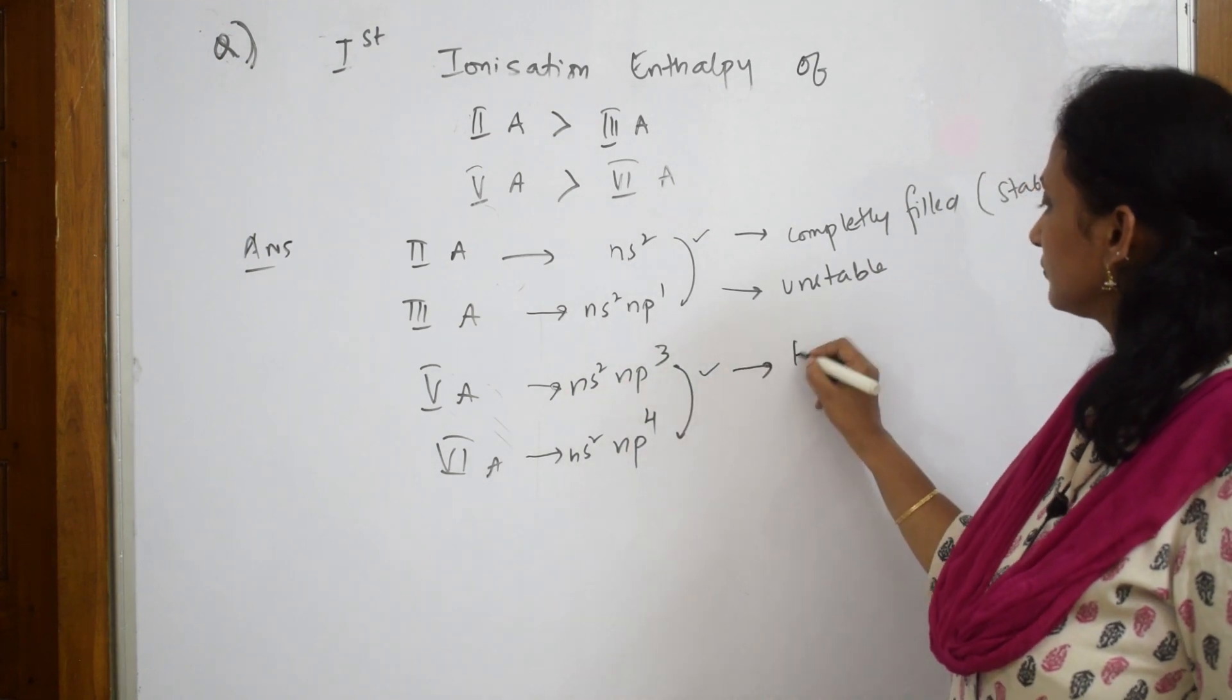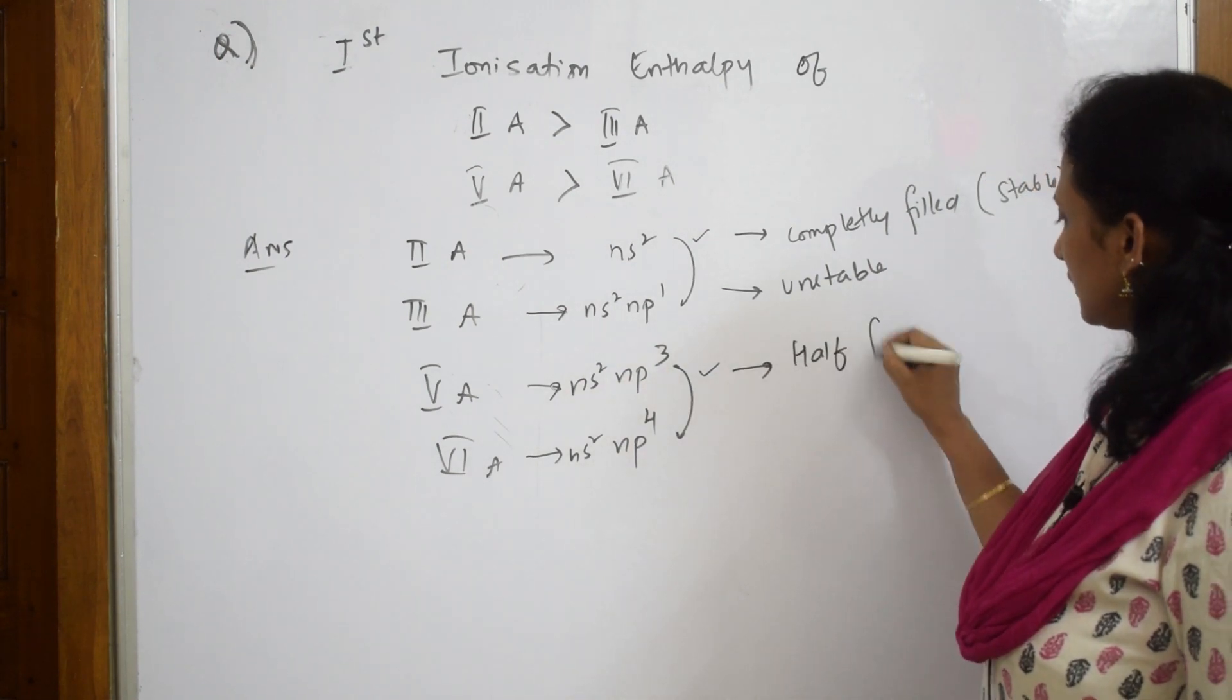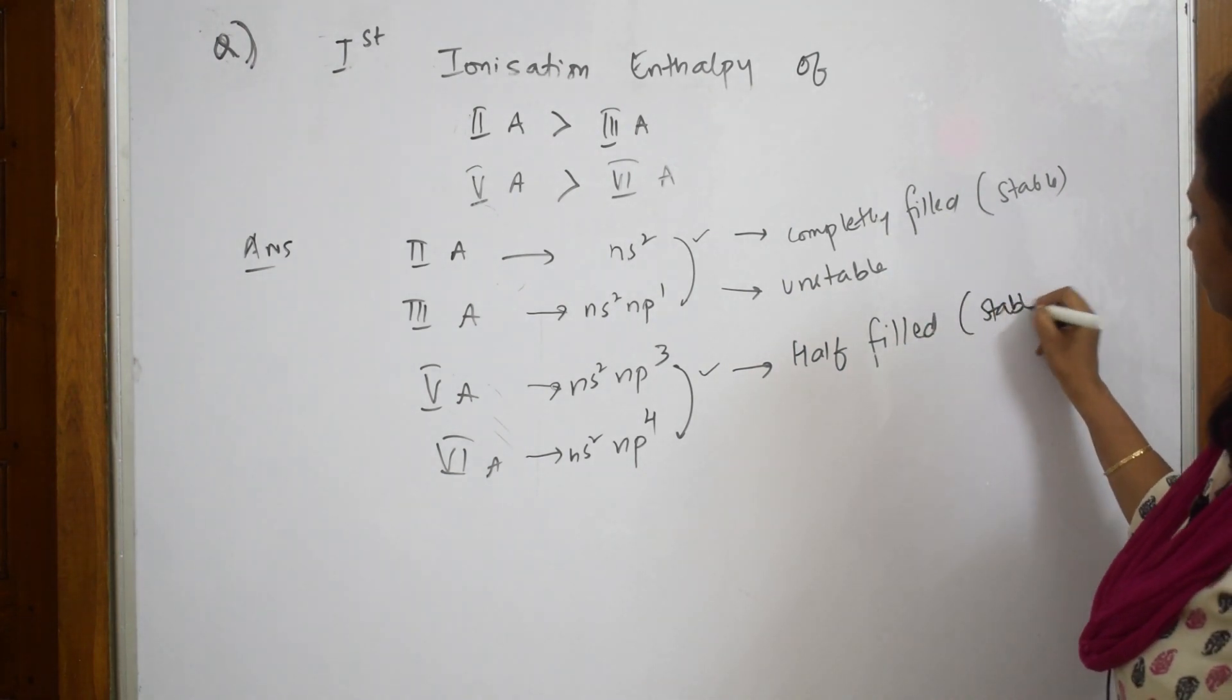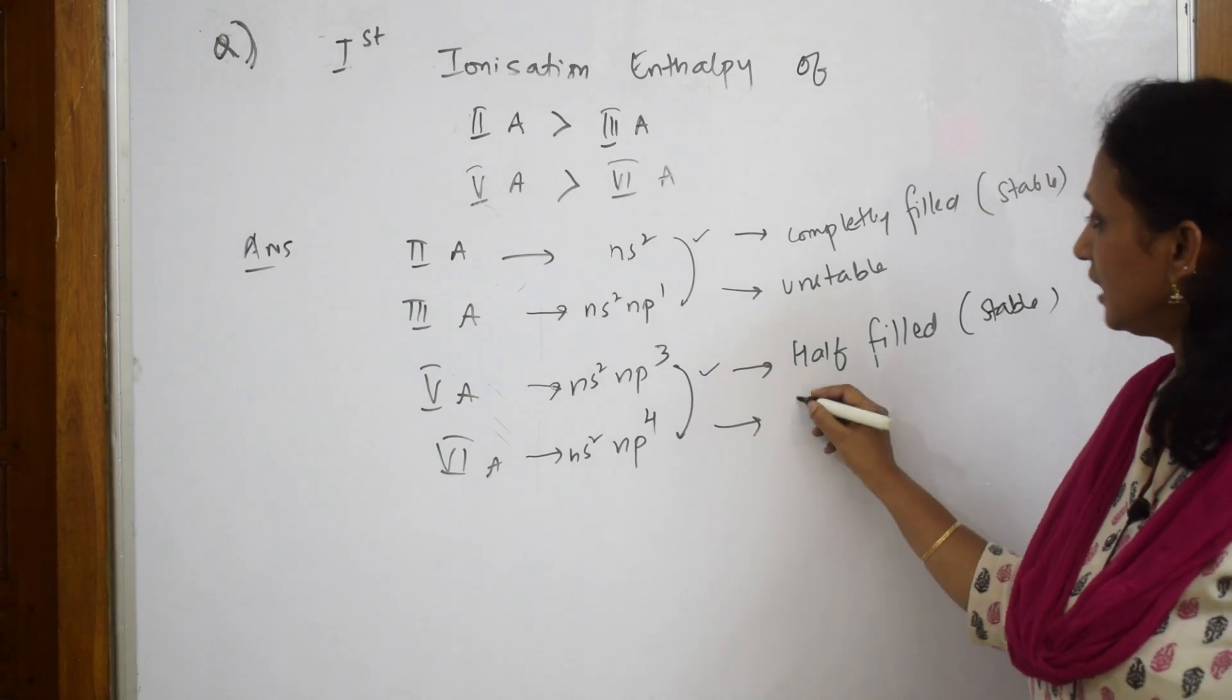In this case it is half filled. Completely filled and half filled are always stable. Now this is unstable - it is incompletely filled.